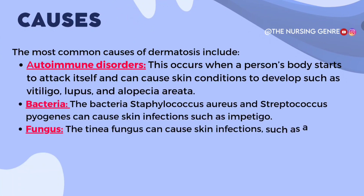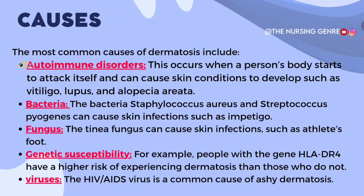The most common causes of Dermatosis include autoimmune disorders — this is when a person's body starts to attack itself. Autoimmune disorders can cause skin conditions such as vitiligo, lupus erythematosus, and alopecia areata. Next, bacteria — Staphylococcus aureus and Streptococcus pyogenes cause skin infections such as impetigo.